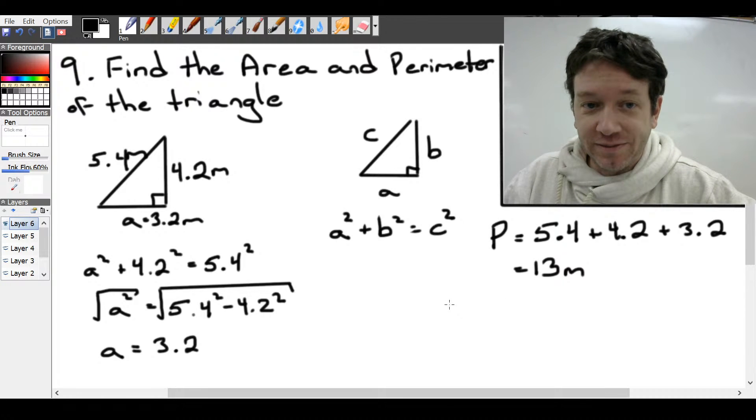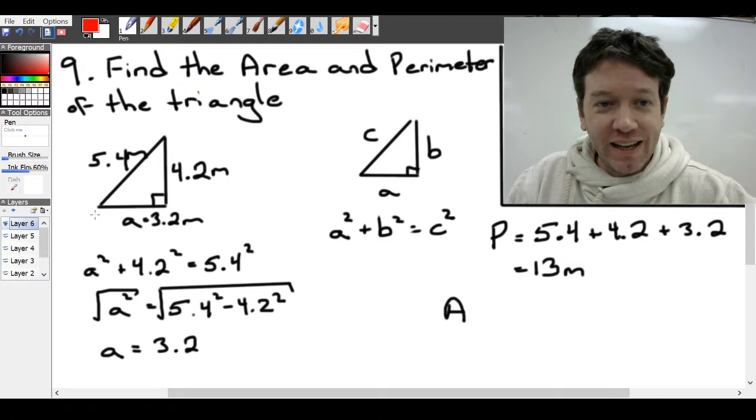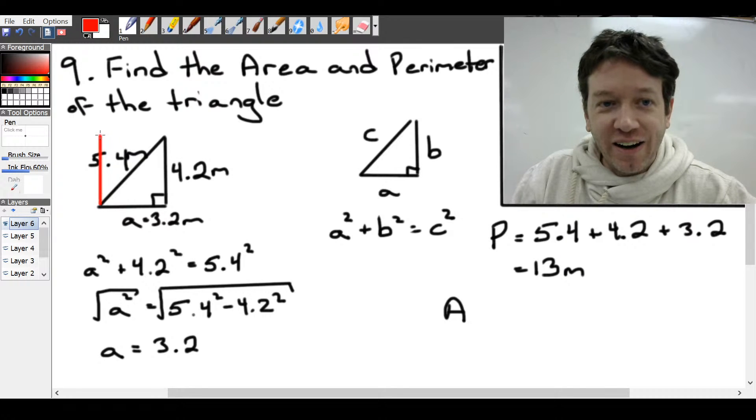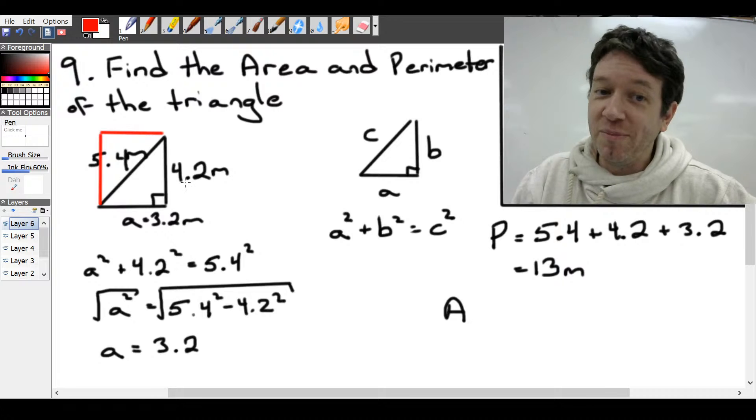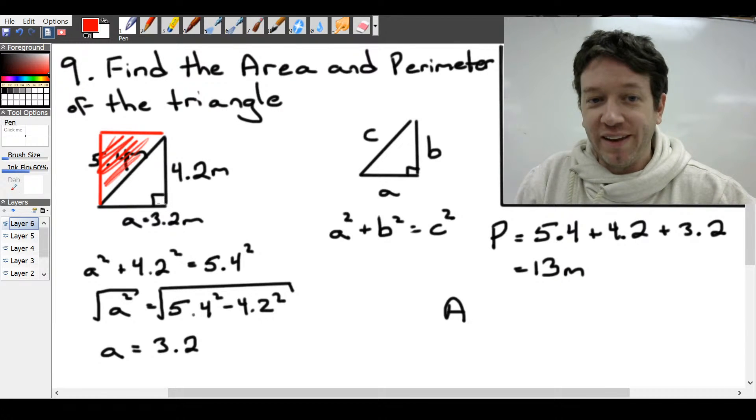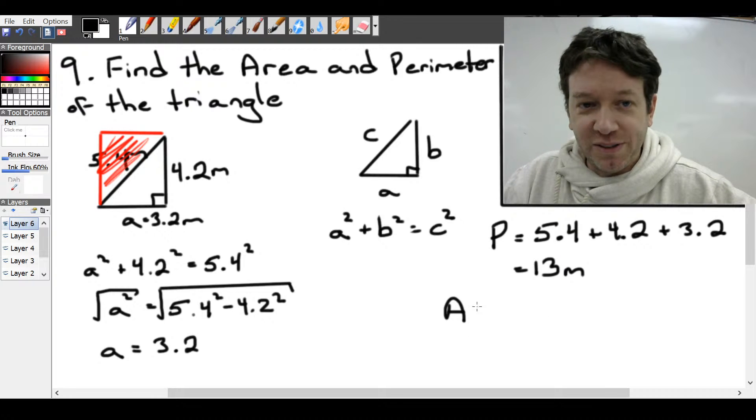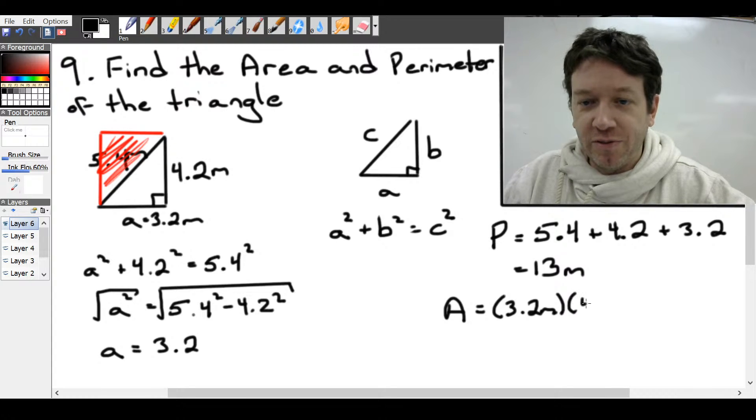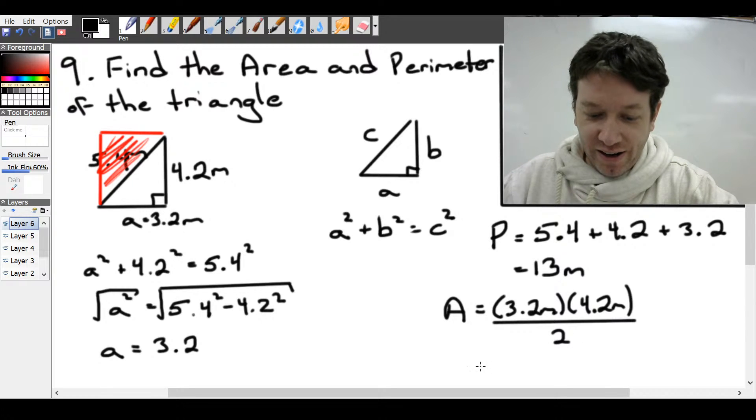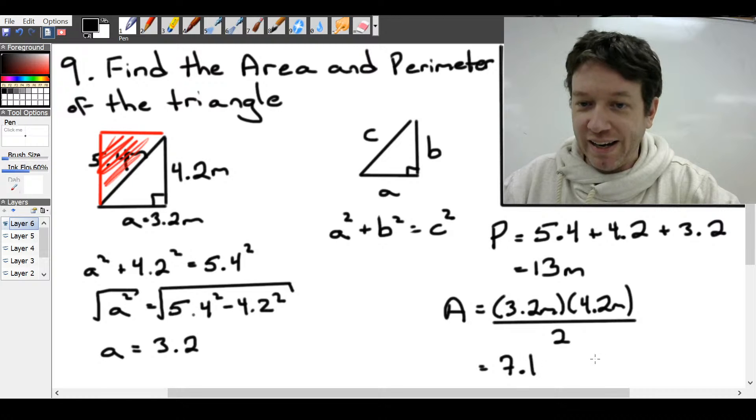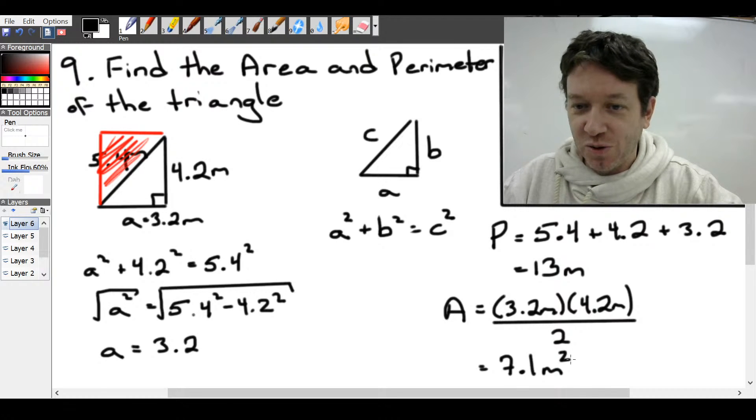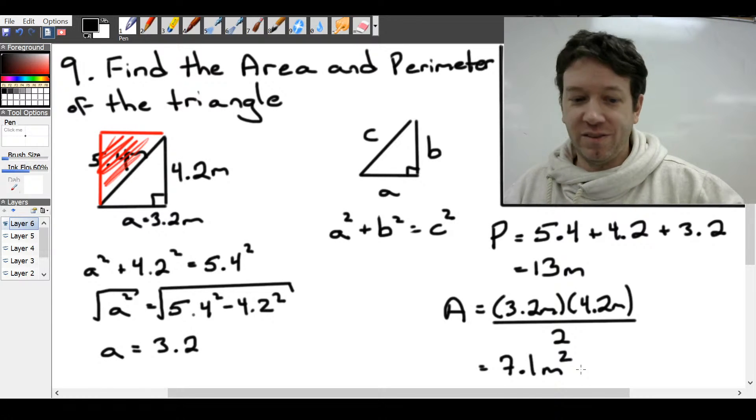Find the area. The area of a triangle is essentially half the area of the rectangle that that triangle would make. Because see, you can see here we have two of those triangles, one here, and then one there. So if we just do a length times width, find the triangle, then we just divide that by 2. So we'll do 3.2 meters times 4.2 meters, and divide that by 2. We get an area of 7.1. And our units will be meters. Meters times meters is meters squared.